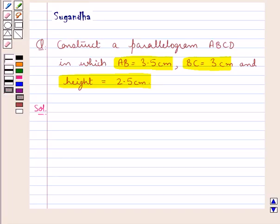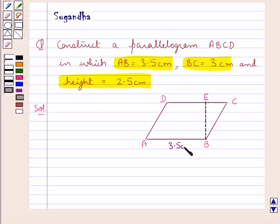First of all, let us draw a rough figure for the parallelogram ABCD which is to be constructed. This is the parallelogram ABCD in which we have AB equal to 3.5 cm, BC equal to 3 cm, and the height — that is BE — equal to 2.5 cm.